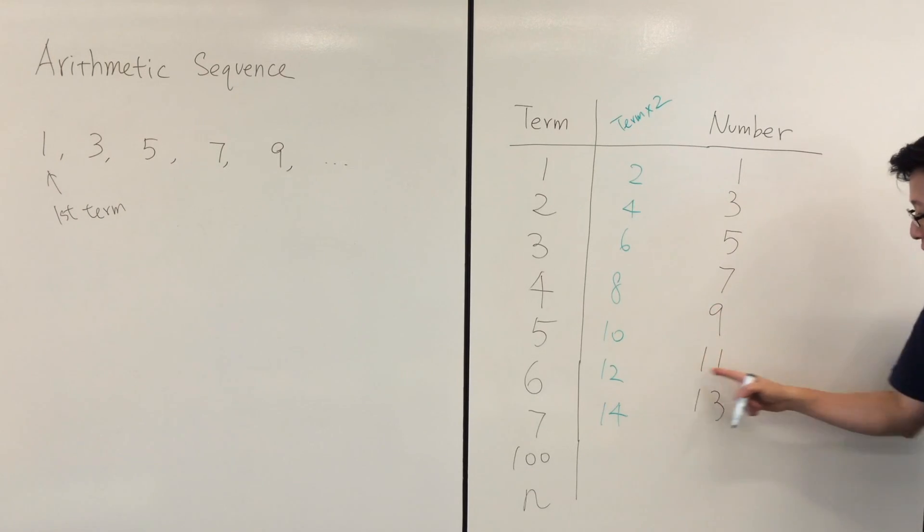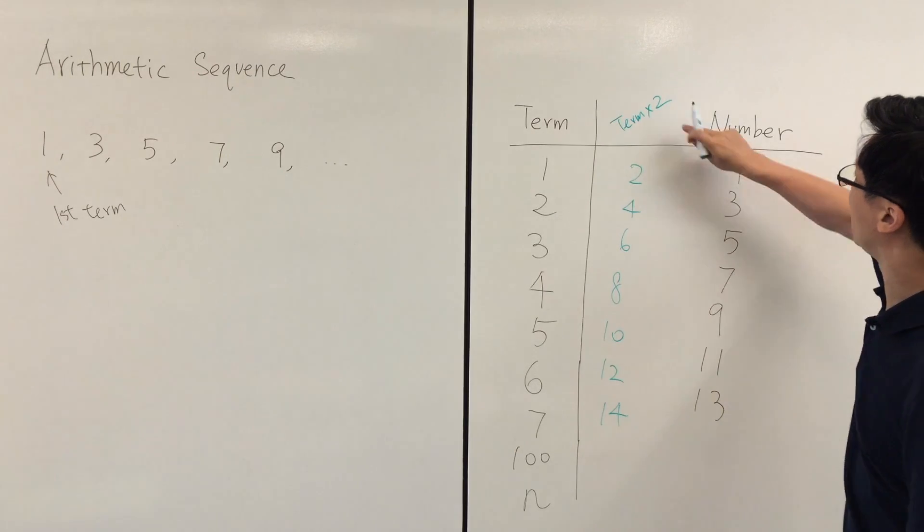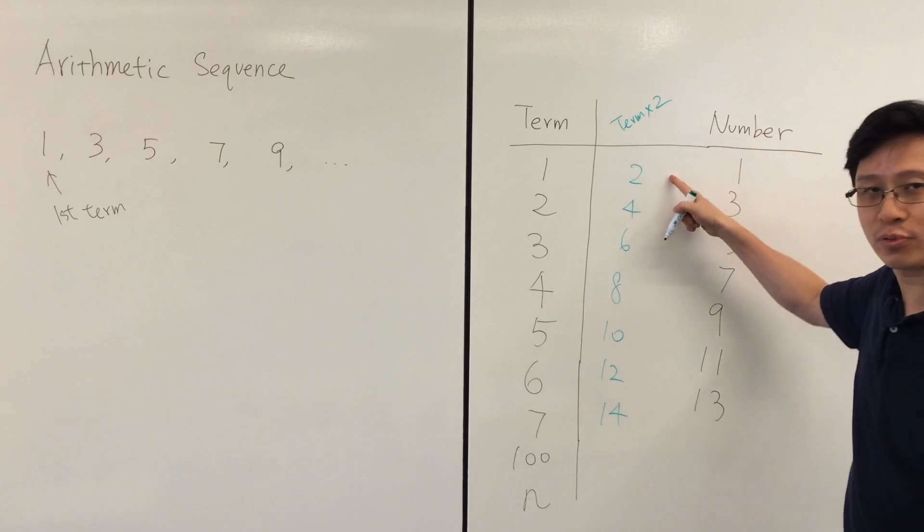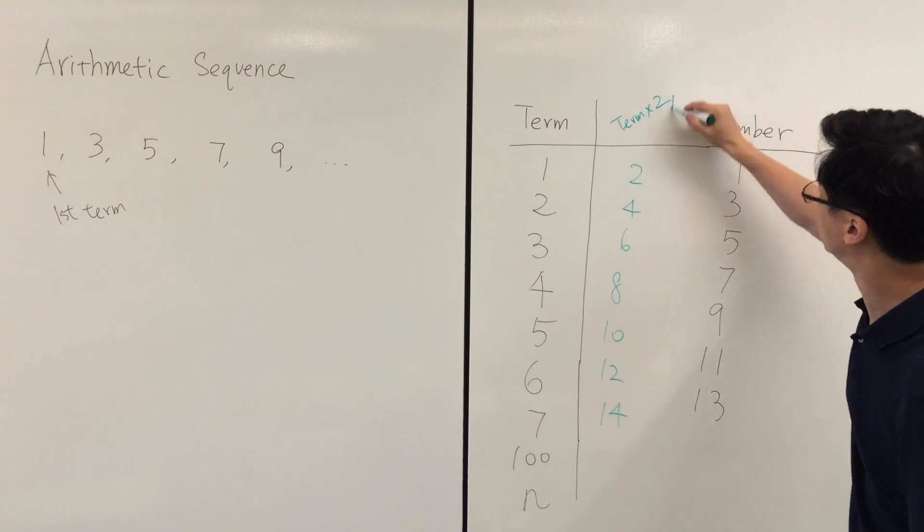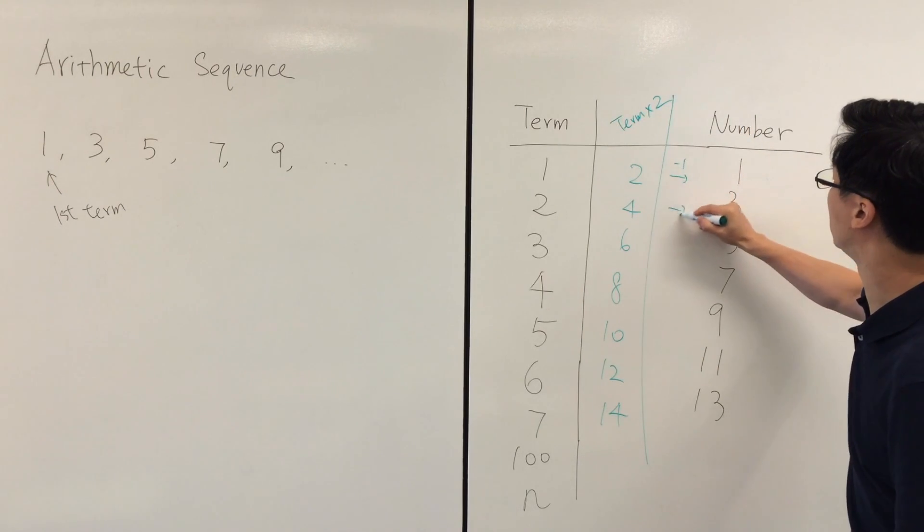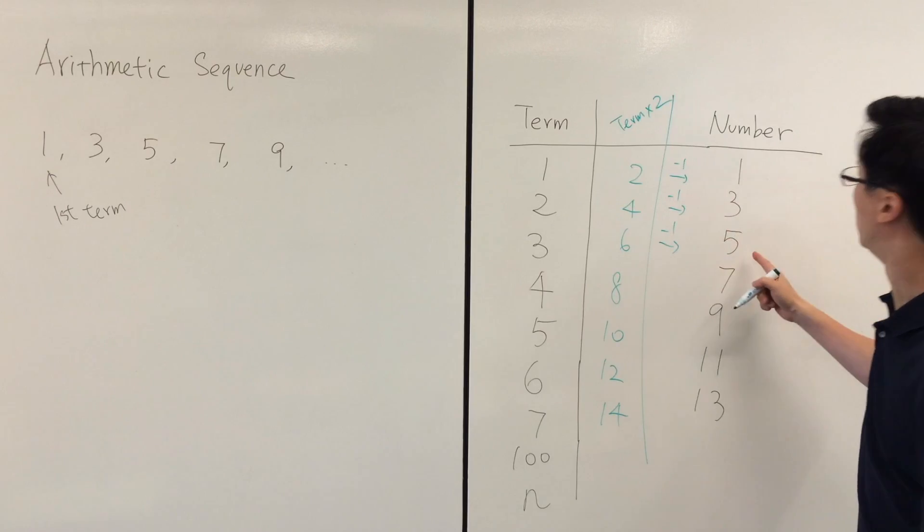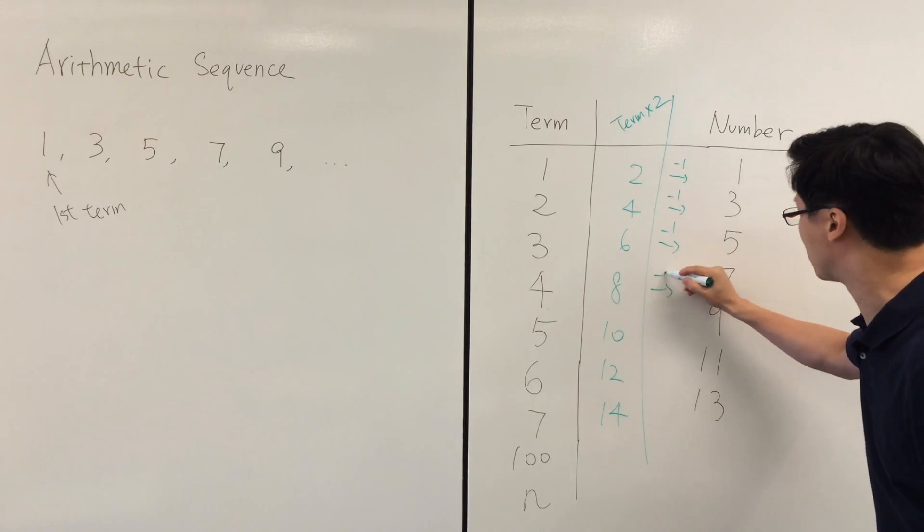So if we again subtract 1 from the second column, we'll get the number on the right hand side. We'll simply subtract 1.